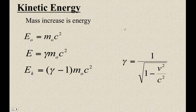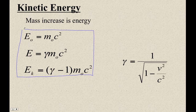Let me explain relativistic kinetic energy. These are the formulas that the data packet gives you, but I think you're better off not using them. My favorite formula to use — because this is actually a pretty simple concept — is just to use E equals mc squared.